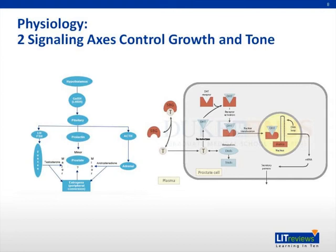5-alpha reductase is an important drug target for BPH. Adrenergic signaling from the sympathetic nervous system is also important to understand prostate function. Alpha-adrenergic receptors, when stimulated, result in smooth muscle contraction within the prostate, urethra, and bladder neck. Alpha-adrenergic receptors are another important drug target for BPH.